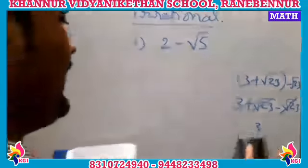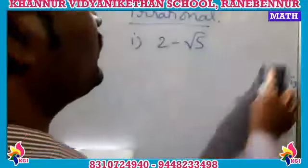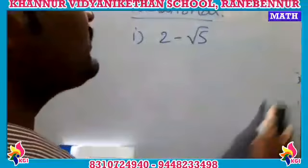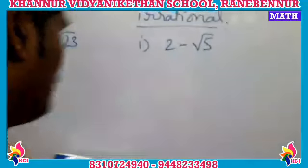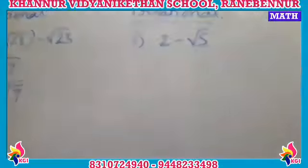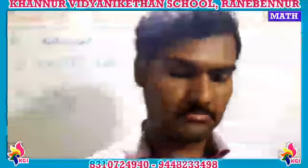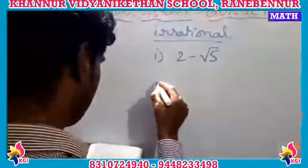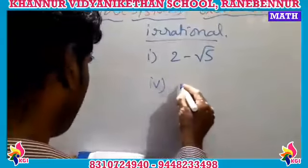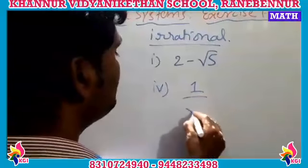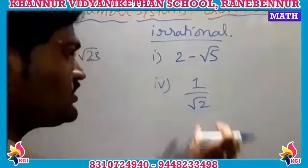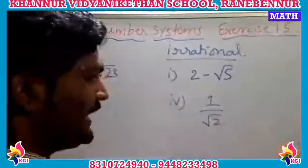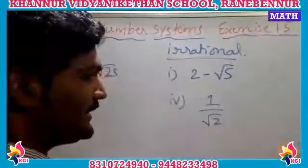The fourth one is 1 divided by √2. The square root of 2 does not have any perfect square factor, so √2 is irrational. Therefore 1/√2 comes under the irrational number column.